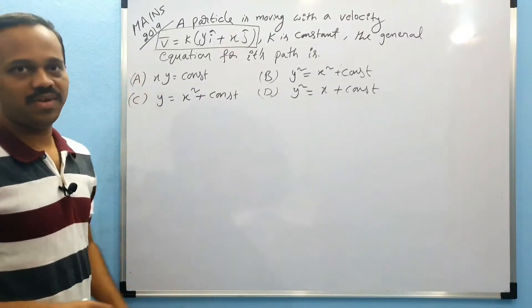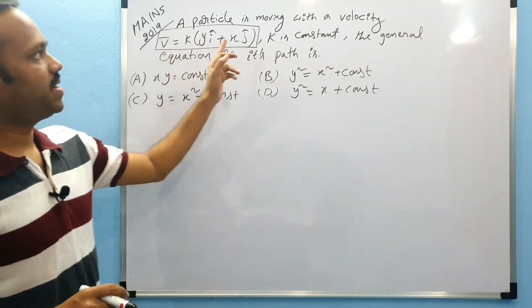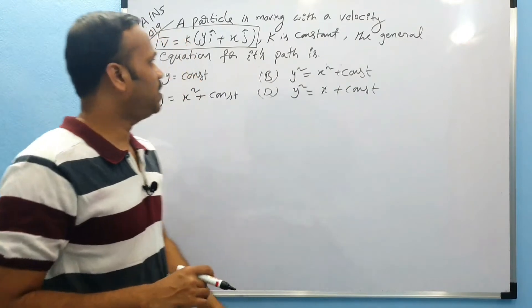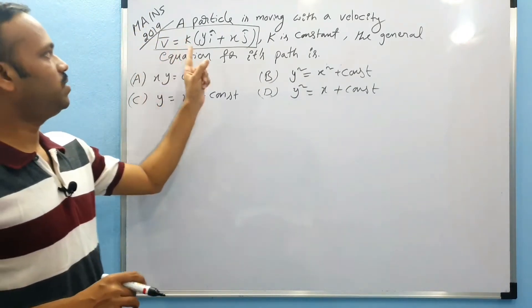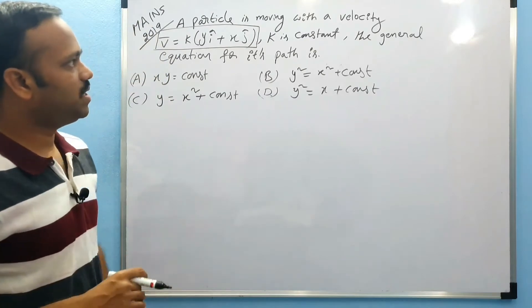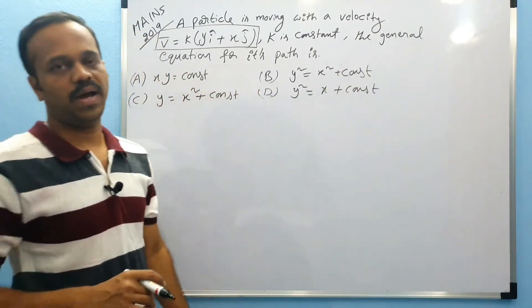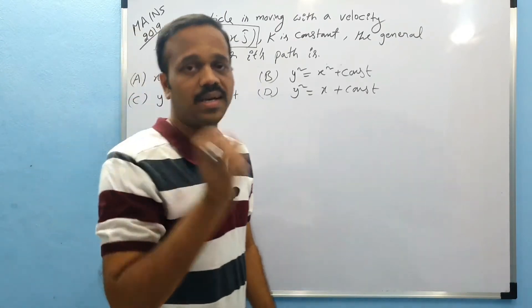This is the equation given in JEE Mains 2019. Let's see what is the question. A particle is moving with a velocity v̄ equals k into (y î + x ĵ) where k is constant. Then we have to find what is the general equation for its path.